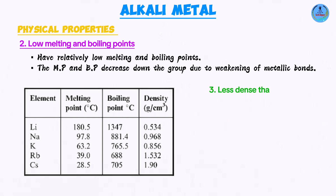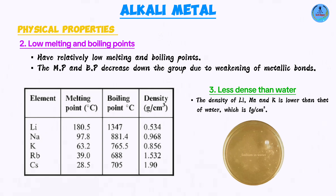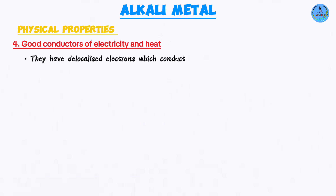Another property has to do with their density: they have low densities — in fact, their densities are even lower than that of water. That is why if you were to cut a piece of sodium and place it in a basin of water, it is going to float around the surface, because it is less dense compared to water.